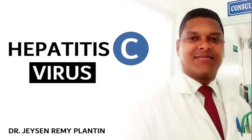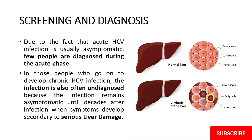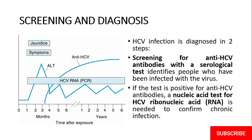Now let's get down to the topic: screening and diagnosis. Due to the fact that acute hepatitis C virus infection is usually asymptomatic, few people are diagnosed during the acute phase. In those who go on to develop chronic hepatitis C virus infection, the infection is also often undiagnosed because it remains asymptomatic until decades after infection, when symptoms develop secondary to serious liver damage.